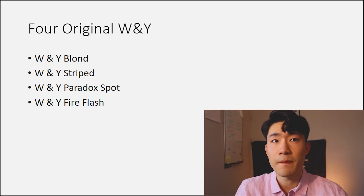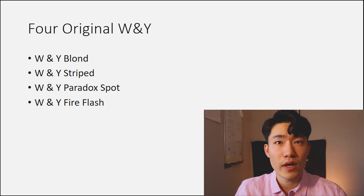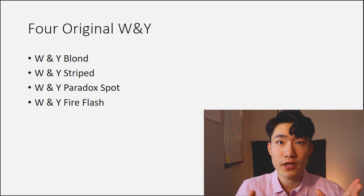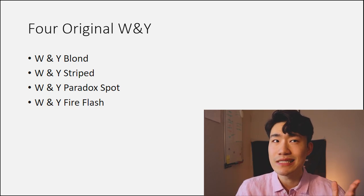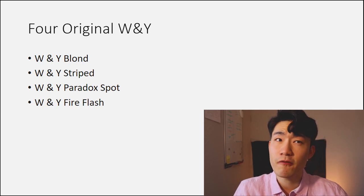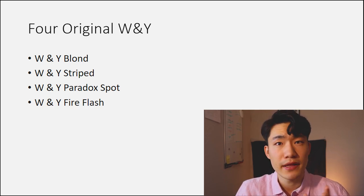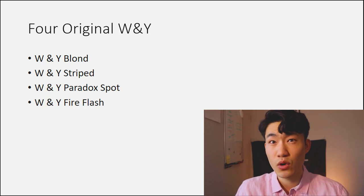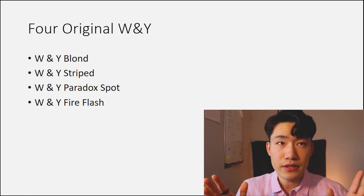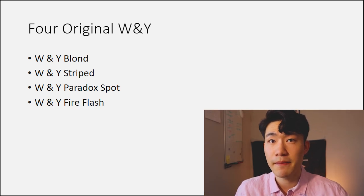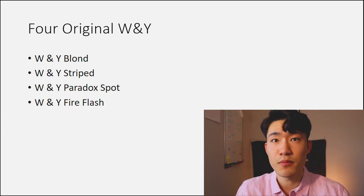The last slide covers the names that were given to the very first WY lines: WY blonde, WY striped, WY paradox spots, and WY fire flash. I went over the striped and paradox spots. I haven't found information on the blonde and fire flash, so I reached out to multiple breeders a couple of days ago. Unfortunately, they couldn't find that information either. Some breeders say it might just be a marketing thing — gecko breeders sometimes put different names on animals to sell more. Those are the things I found when studying WY.